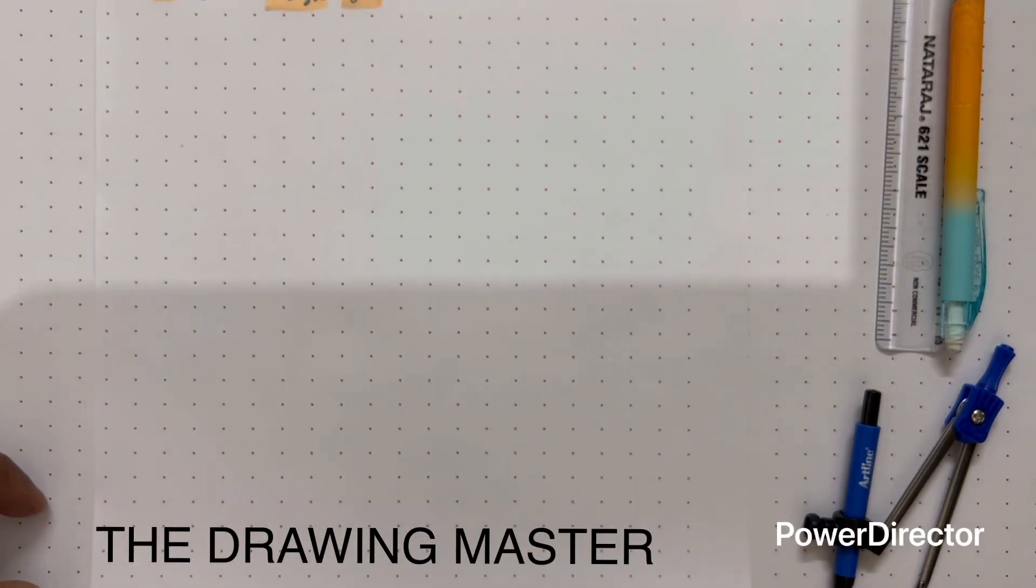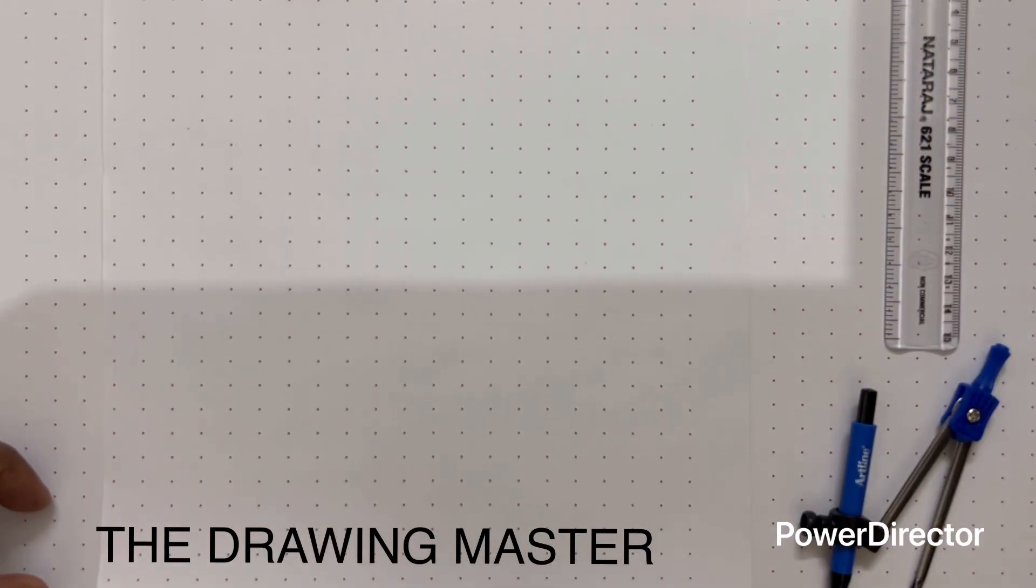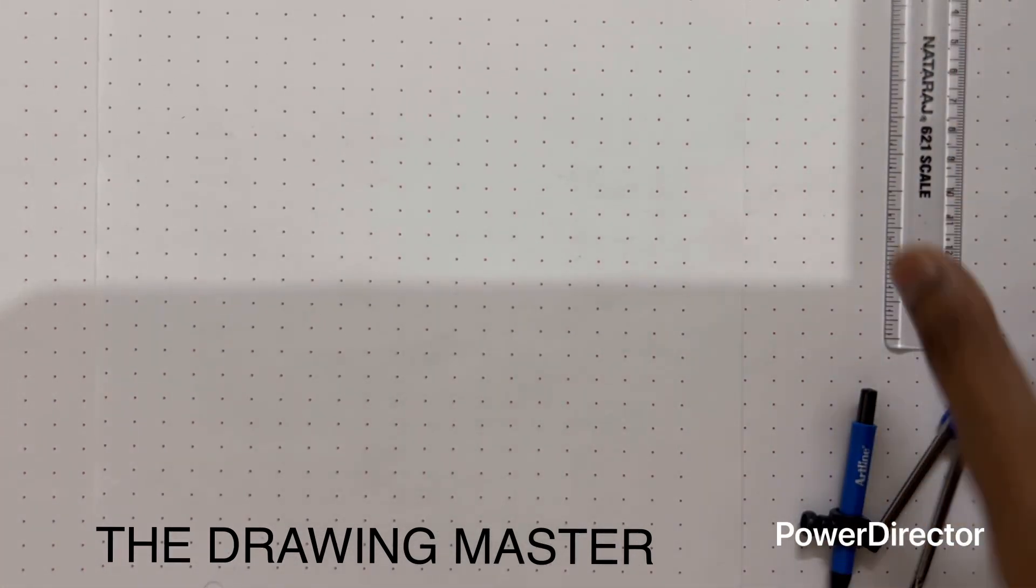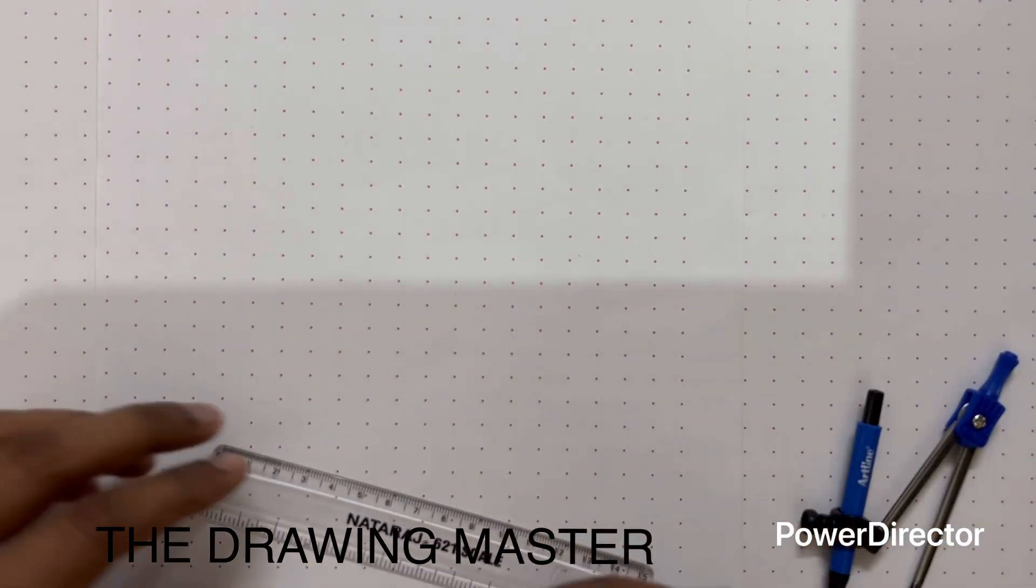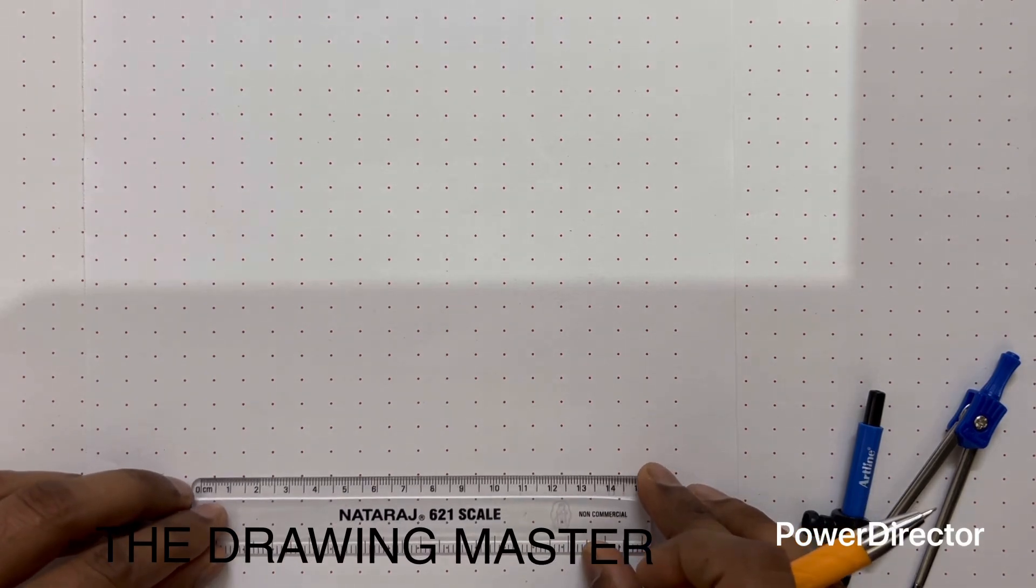I hope you have seen the previous video of isometric view of square base pyramid. 50% of the procedure will remain same, so in this case again first let's draw one reference line.